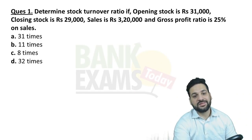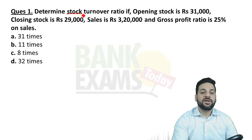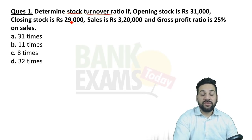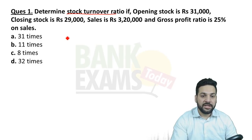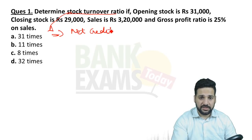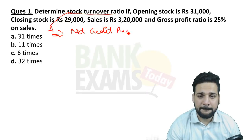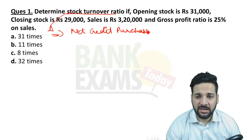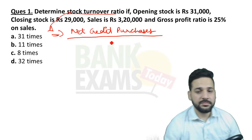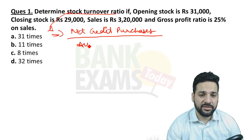Let's start with question number one — please try to find out the stock turnover ratio. Pause the video and try to solve it yourself. If you are not able to, let me tell you how: the stock turnover ratio is net credit purchases divided by average inventory.